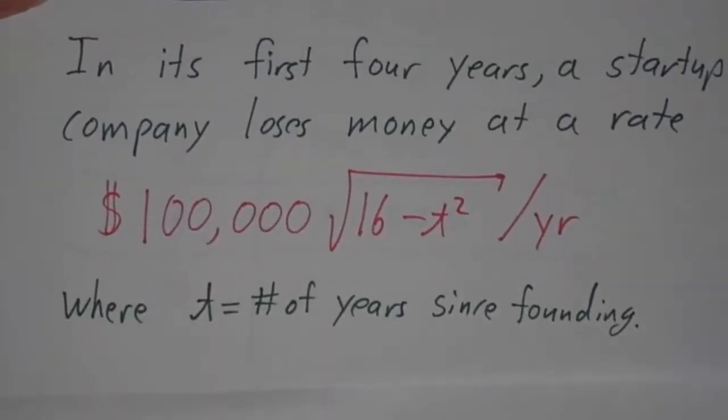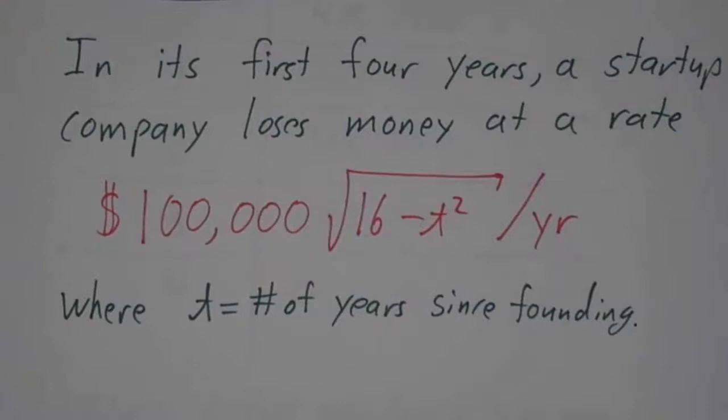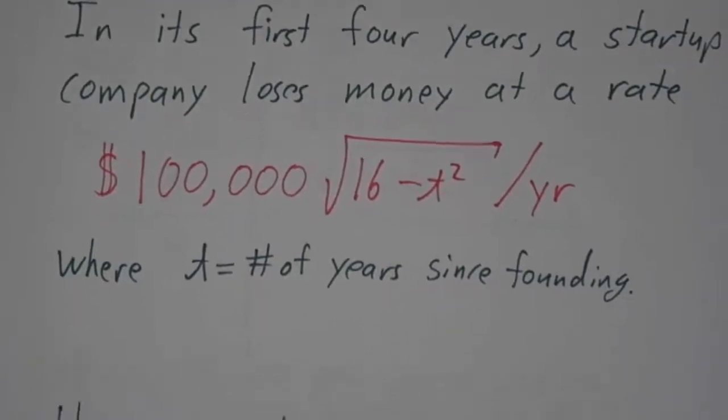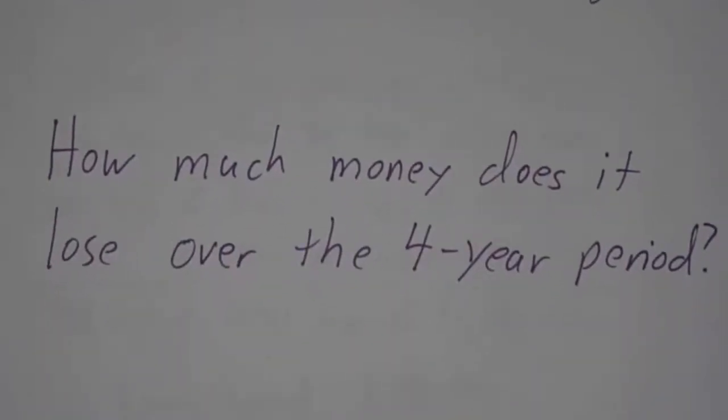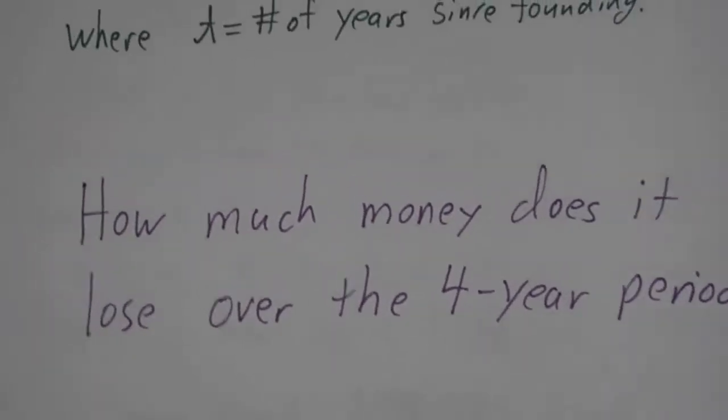We're looking at a startup company that loses money at the beginning. In fact, it loses a lot of money. It loses money at a rate of $100,000 times the square root of 16 minus t squared dollars per year, where t is the number of years since its founding. The question is: how much money does it lose over the first four years, after which it becomes profitable?